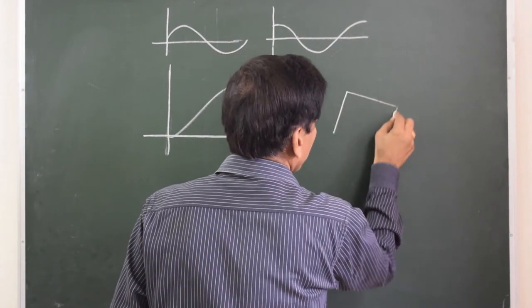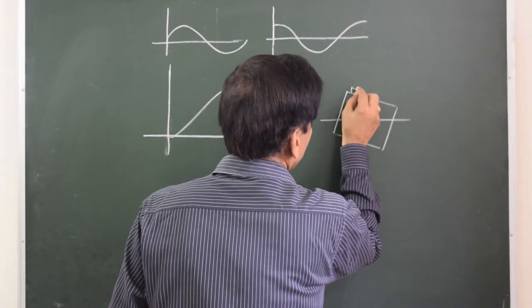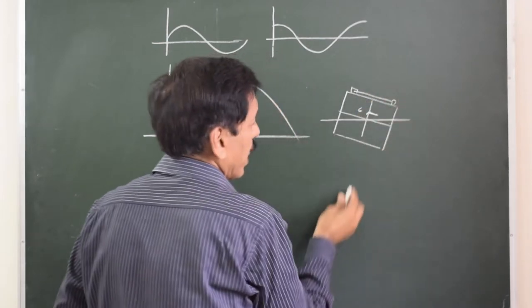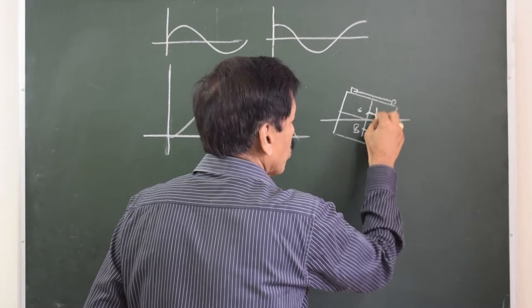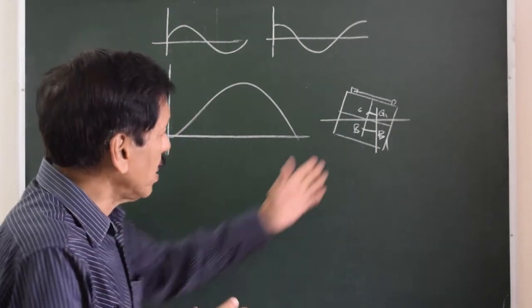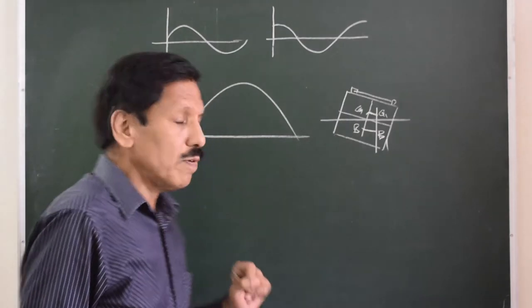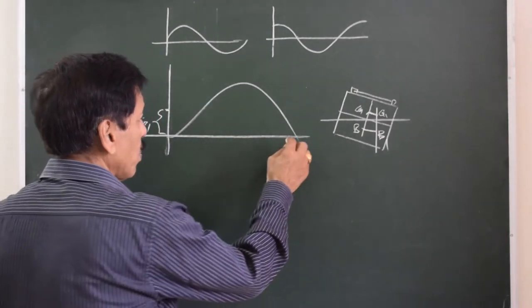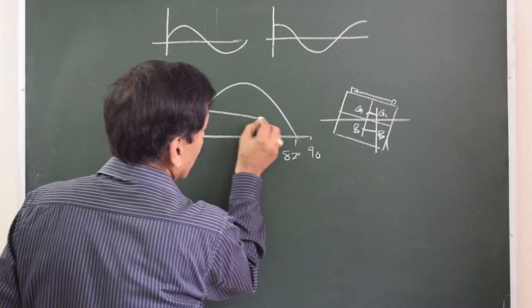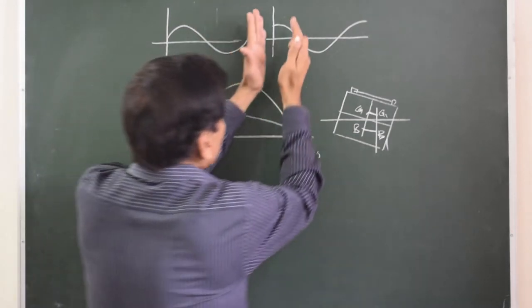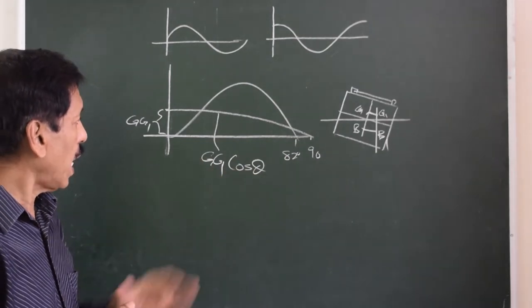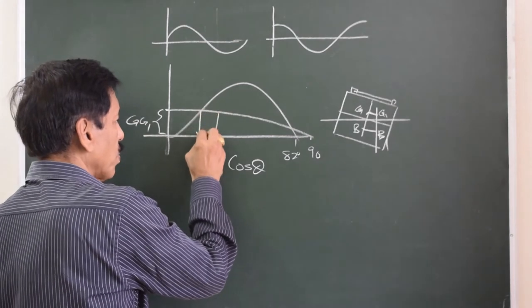For a listed ship — where list is caused by a shift of weight — G moves parallel to the deck. In the listed posture, G1 and B1 come in one vertical line. The distance GZ1 is shown on the y-axis. A cosine curve of GG1·cosθ from 0 to 90 degrees represents the listing or upsetting moment, and where this curve cuts the GZ curve gives the list angle.